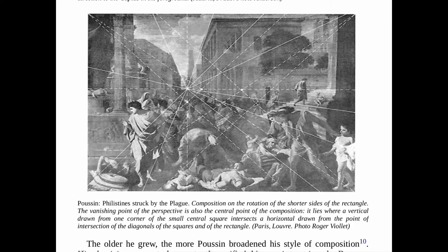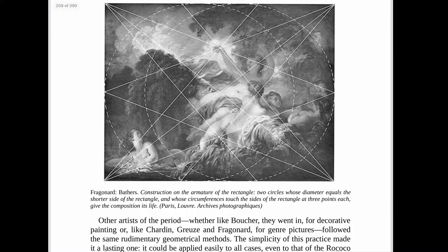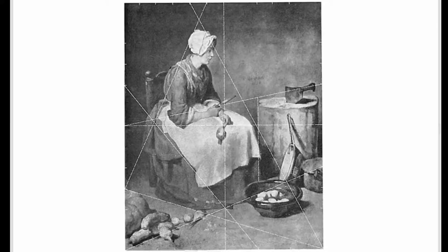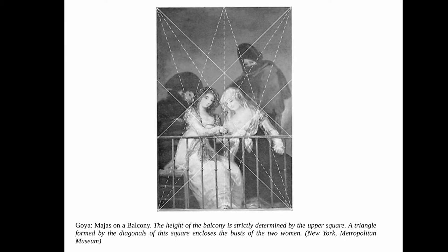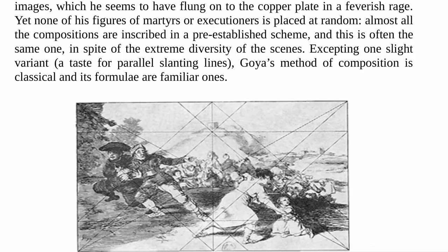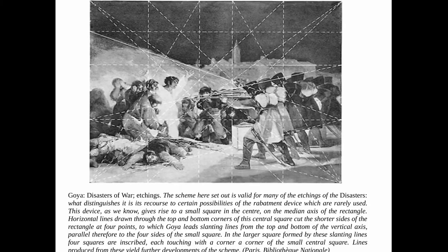Static rectangles are described as being based on whole number ratios, like three by five squares or four by five squares, whereas dynamic rectangles are described as root rectangles with ratios not based on whole numbers. For instance, the root two rectangle is one by one point four one four two.